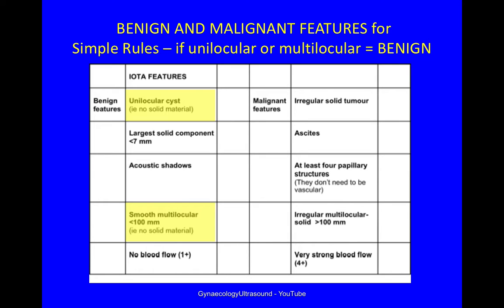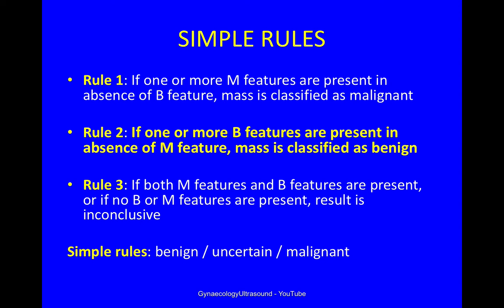The benign features for simple rules include a unilocular cyst with no solid material, or a smooth multilocular cyst less than 10cm with no solid material. In the absence of malignant features, such a cyst is likely to be benign. You can pause the video to review the simple rules.